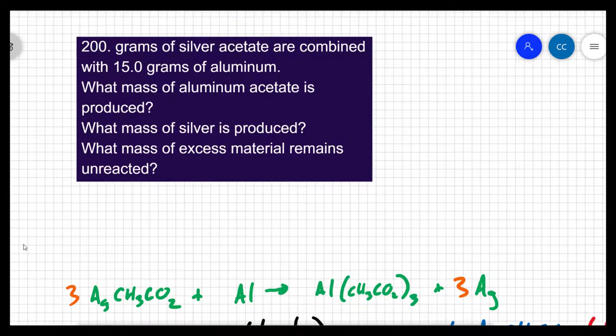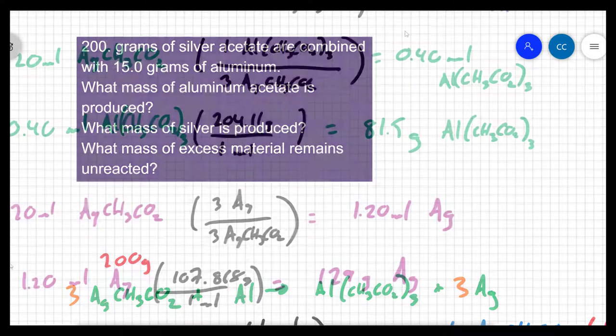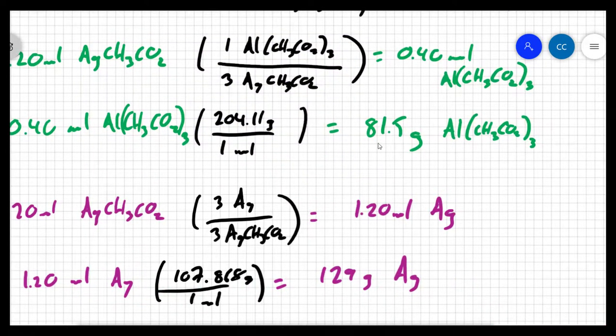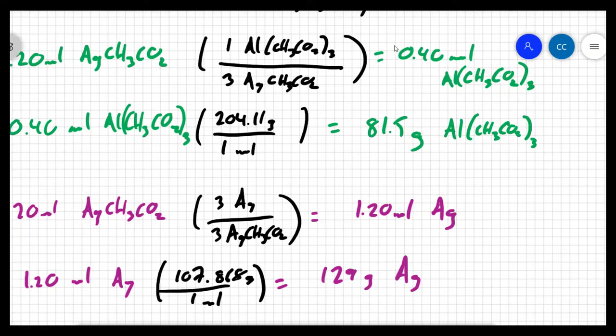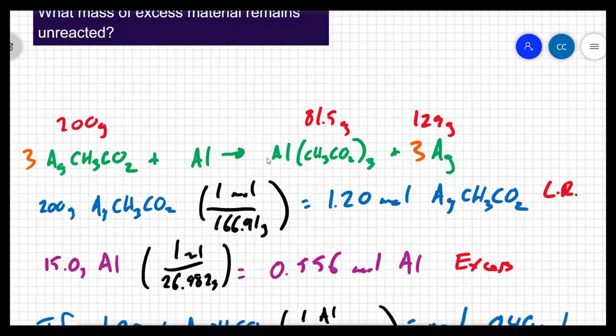We know that we started with 200 grams of the silver acetate. We know we made 81.5 grams of the aluminum acetate and 129 grams of the silver. That means I made 211 grams of total product.